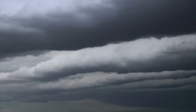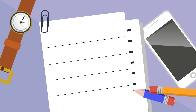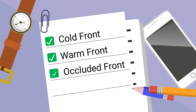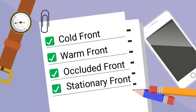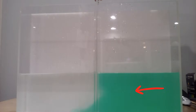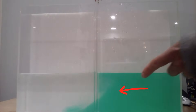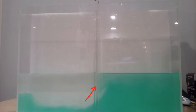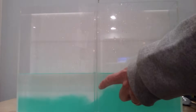The four kinds of fronts are called cold fronts, warm fronts, occluded fronts, and stationary fronts. In this demonstration you can see colder green water move under warmer clear water, and how the warm water moves above the cold water. This is very similar to how masses of air act.